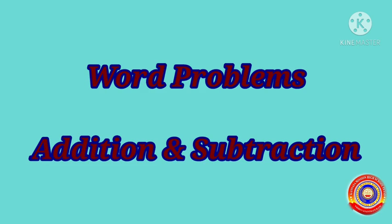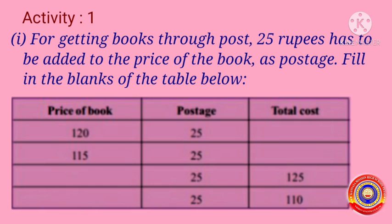Let's continue this chapter with some word problems related to addition and subtraction. Activity number one: for getting books through post, 25 rupees has to be added to the price of the book as postage. Fill in the blanks of the table below. Here price of books, postage, and total cost are given. We have to complete this table.